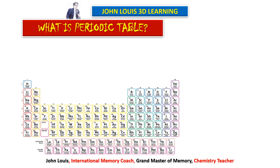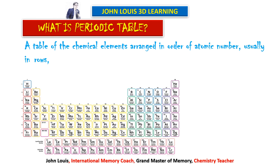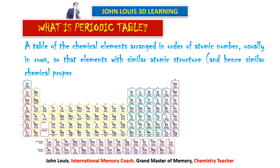First of all, what is a periodic table? Here you can see a table in which all 118 elements are arranged neatly in a perfect order. It is a table of chemical elements arranged in order of atomic number, usually in rows, so that elements with similar atomic structure and similar chemical properties appear in vertical columns.